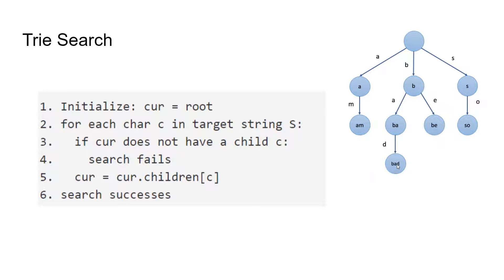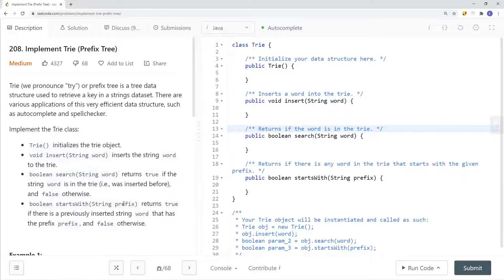For the search method, say we want to search 'bad'. We initialize the current node to root and iterate each character in the string. If the current node does not have a child for the current character, that means the string doesn't exist so we return false. To continue traversing down, we set current to current.children[c]. At the end, if we successfully traverse the entire string, we return true.